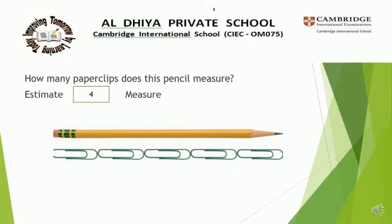How many paper clips are here? Count: 1, 2, 3, 4, 5. So how many paper clips is here? 5 — so the measurement is 5 paper clips. You all understand this? This is the actual length of the pencil, and the estimation is approximately what we guessed for the length of the pencil.